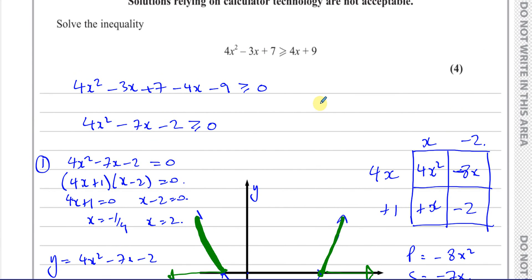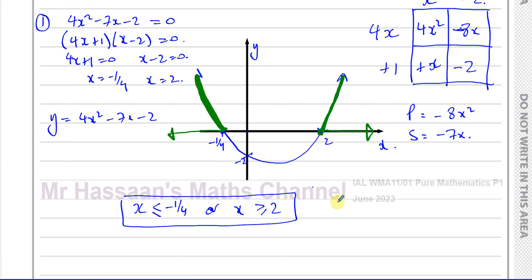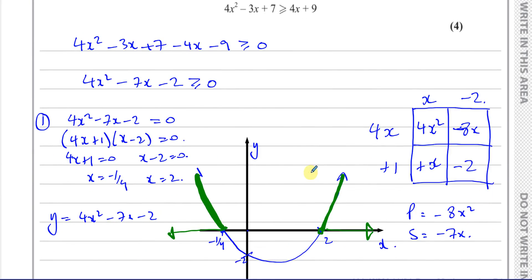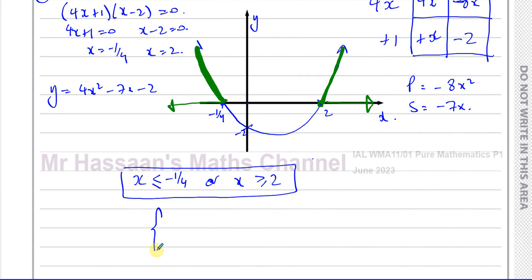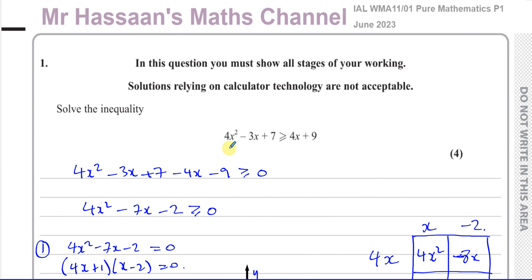These are the set of values which satisfy this inequality. Whenever x is less than or equal to negative a quarter or greater than or equal to 2, then this inequality is true. And if this inequality is true, then it means this inequality is also true because it follows on. We just subtracted 4x and 9 from both sides. So there is the solution to this question. The question did not ask us to write it in set notation. If it did, we could just write something like this. We say x is such that x is less than or equal to negative a quarter union with, not intersection with, x is greater than or equal to 2. Because it's not intersecting because there's no commonality between these two. So it's when x is less than negative a quarter or when x is greater than or equal to 2, that's when this inequality is true. But you don't have to write it in set notation. Writing it in this form is absolutely fine.